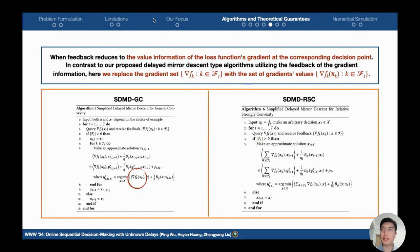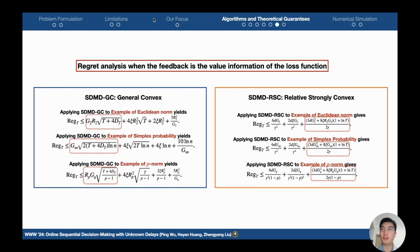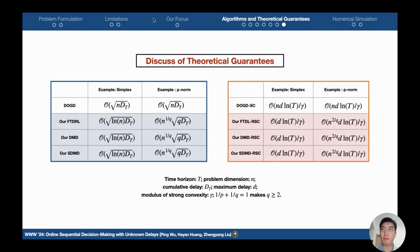When the feedback is reduced to the value information of the loss function's gradient, we replace the gradient set with the value set. Our simplified delayed mirror descent can achieve the similar regret bound with the algorithm which utilizes the full information or the gradient information.